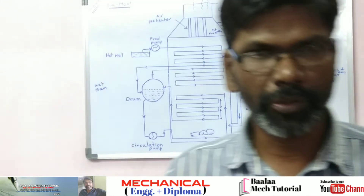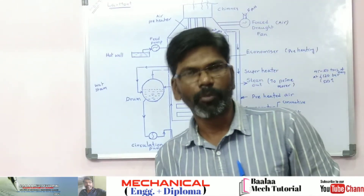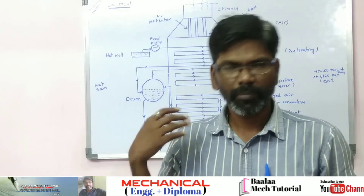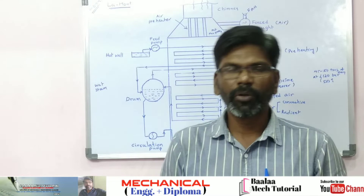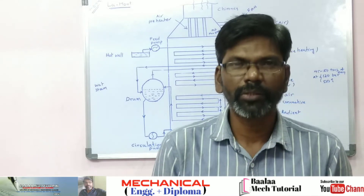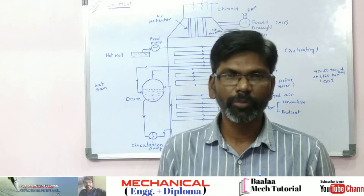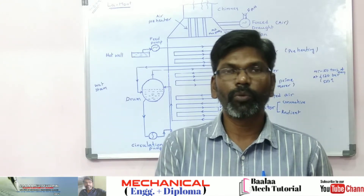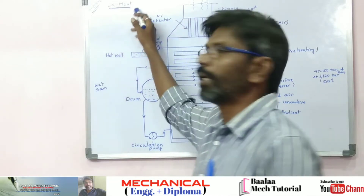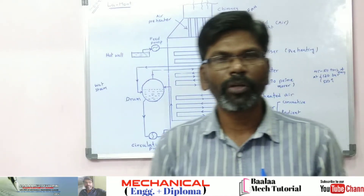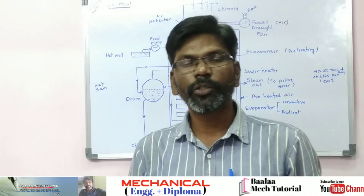Welcome back to Balamec Tutorials. Here is my discussion about the concept of lemon (Lamont) boilers. I have 5-2 boilers and 4-2 boilers. One of these is a water tube boiler, and the water tube boilers are the lemon (Lamont) boilers. The lemon boilers are the forced circulation water tube boilers.